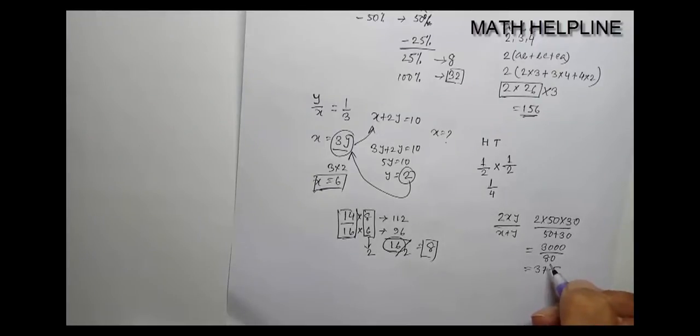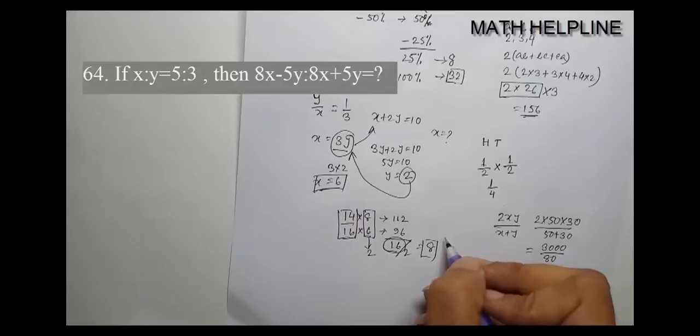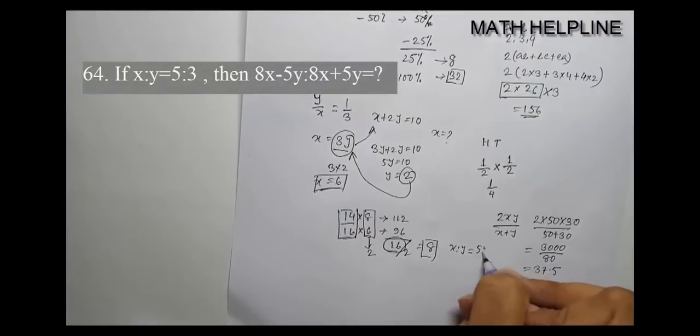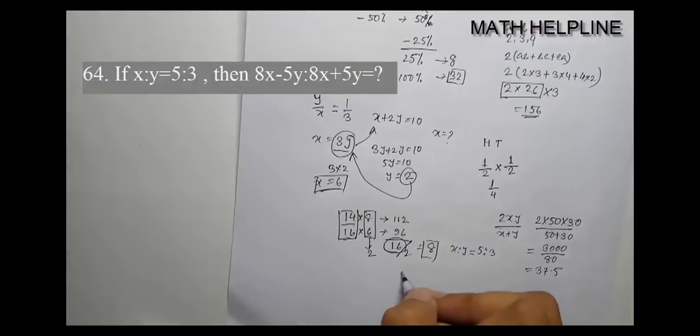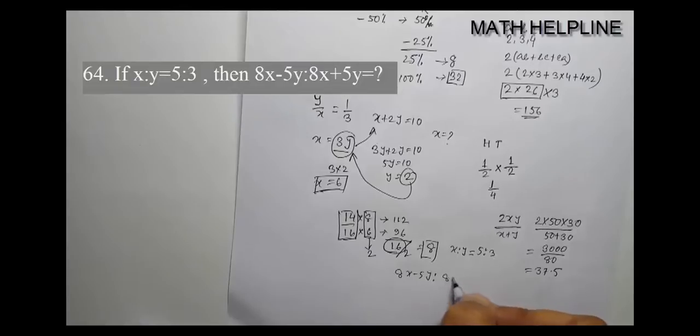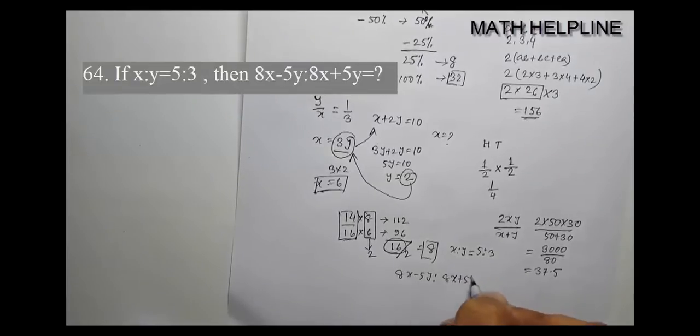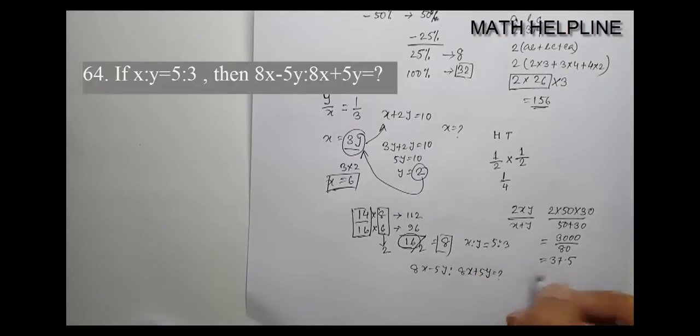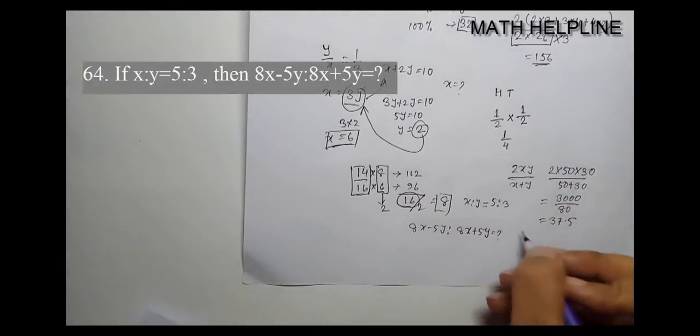Let me check the numbers. If x minus y equals 5.3, then what is 8x minus 5y?